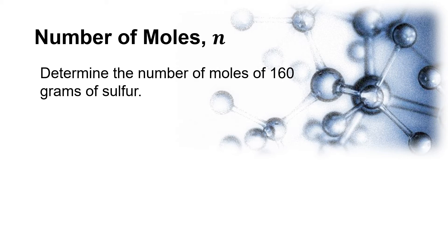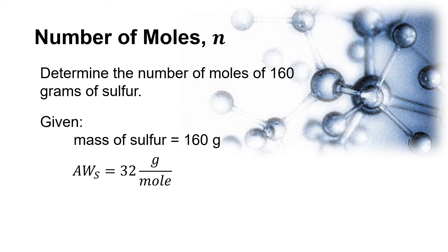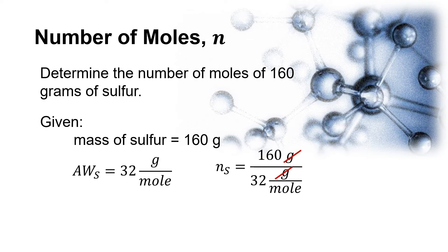Determine the number of moles of 160 grams of sulfur. In this problem, our given is sulfur, which is just an element, and the given mass of sulfur is 160 grams. The atomic weight of sulfur is 32 grams per mole. The number of moles of sulfur is equal to 160 grams divided by 32 grams per mole. Therefore, the number of moles of sulfur is equal to 5 moles.